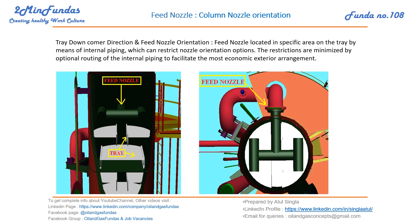The next important nozzle is the feed nozzle. As we have discussed at the start while we were discussing the column of operation, we started with the feed nozzle which is always located at around the middle of the column.